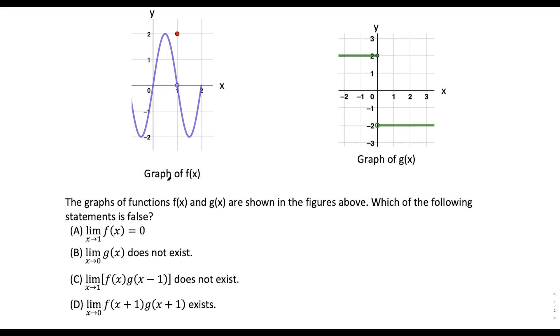We have a graph of f of x and g of x, and we want to know which of the following statements is false. We have all these limit statements here. So just so I go through each answer choice as thoroughly as possible, I want to look at a sketch of all of the transformations here.